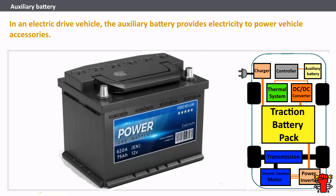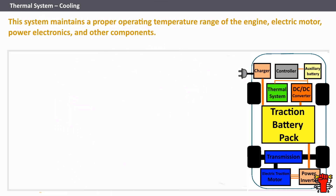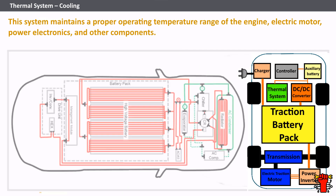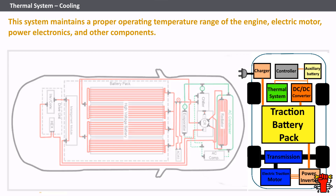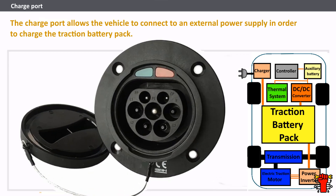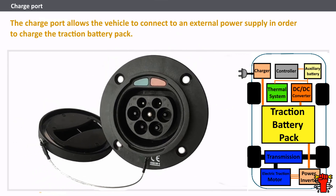In an electric drive vehicle, the auxiliary battery provides electricity to power vehicle accessories. The thermal system maintains a proper operating temperature range of the engine, electric motor, power electronics, and other components. The charge port allows the vehicle to connect to an external power supply in order to charge the traction battery pack.